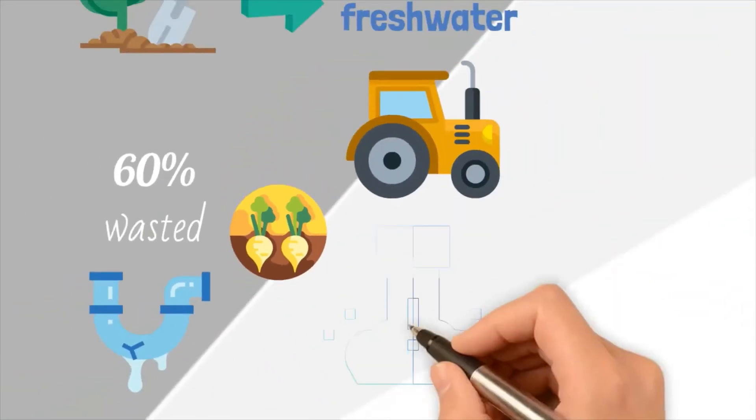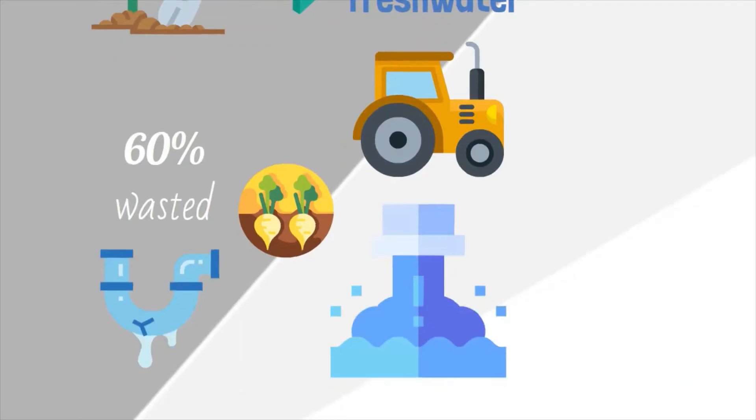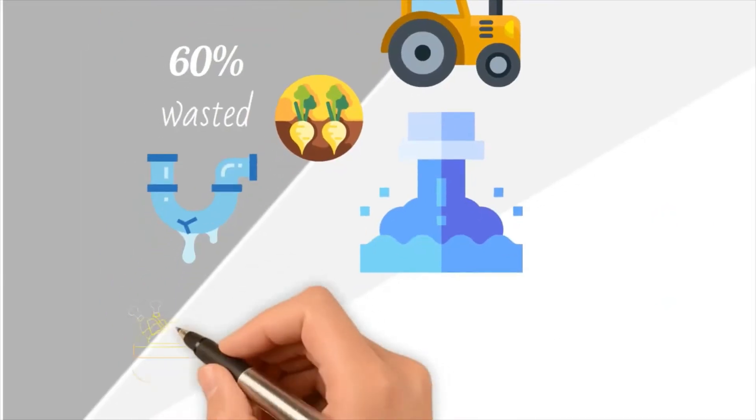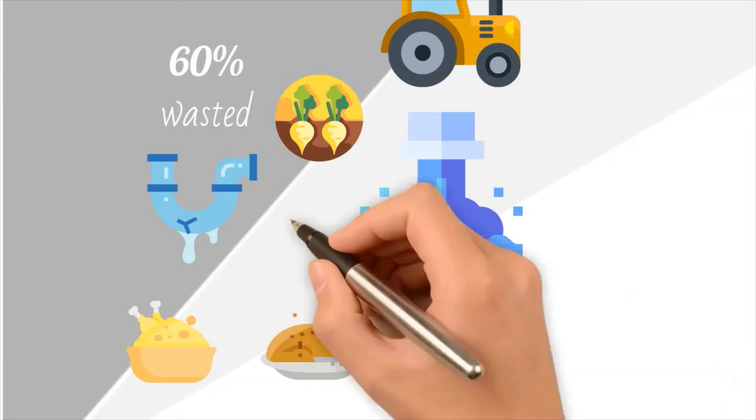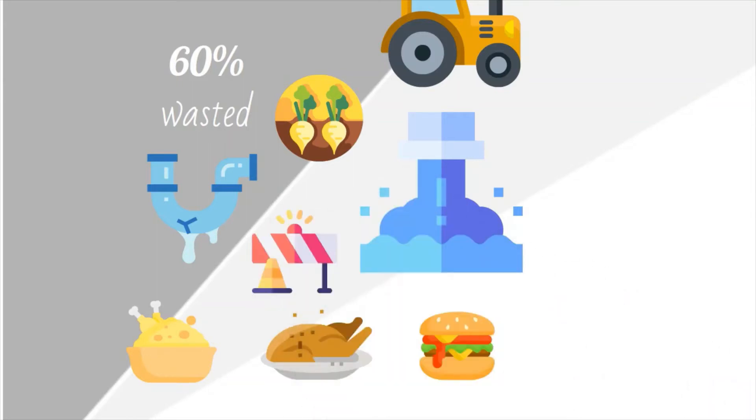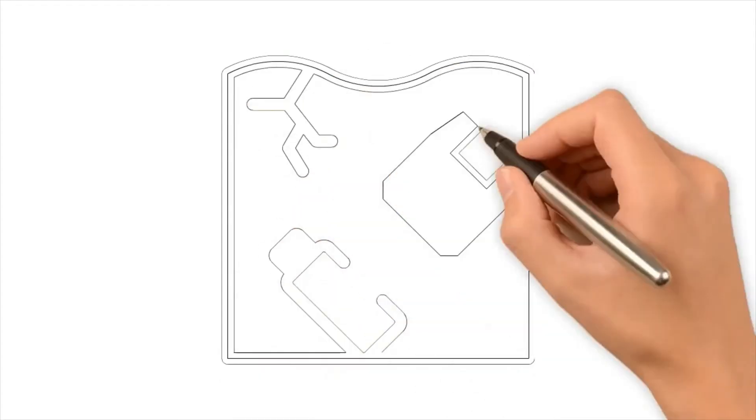This wasteful use of water is drying out rivers, lakes, and underground aquifers. Many countries that produce large amounts of food, including India, China, Australia, Spain, and the United States, have reached or are close to reaching their water resource limits.